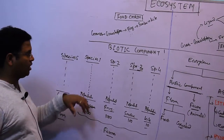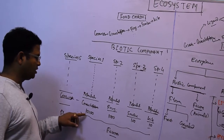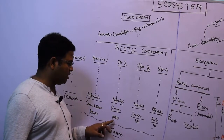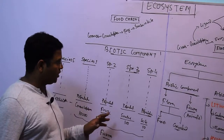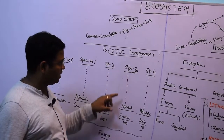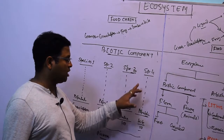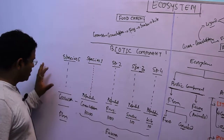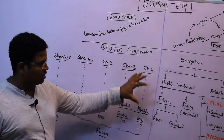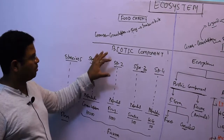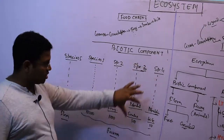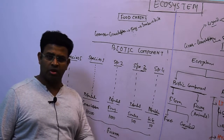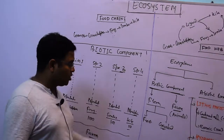Suppose in a geographical region there is one species — a grasshopper — and their population is 10,000. Another species is a frog with a population of around 1,000, and another species is a snake with a population of around 100. At the same time, there are grasses and trees. All these populations of different species together make up a biotic community — the population of different species in a given geographical region.